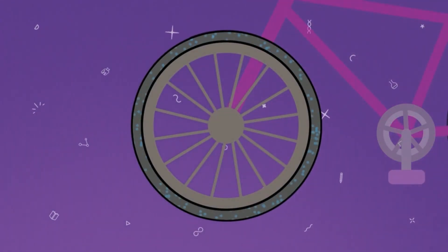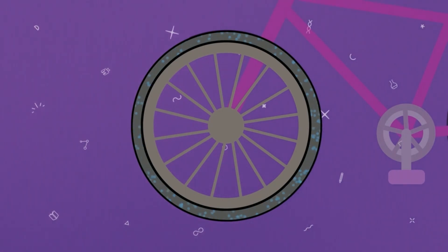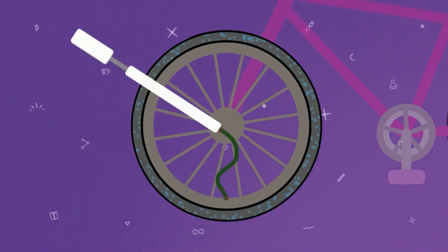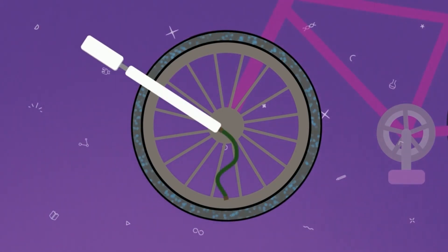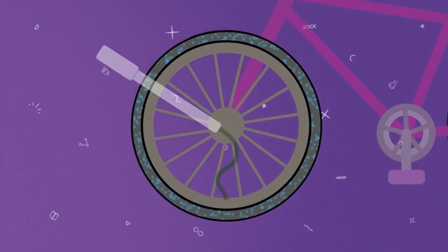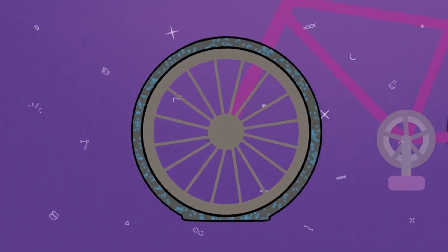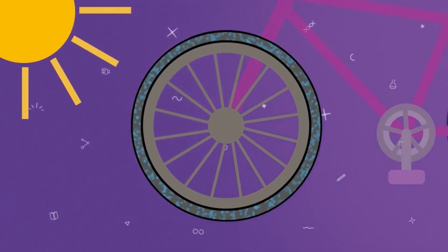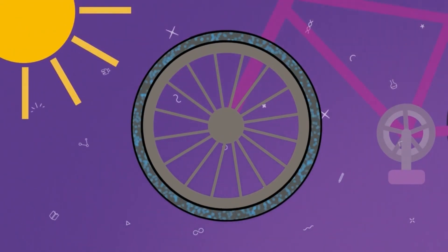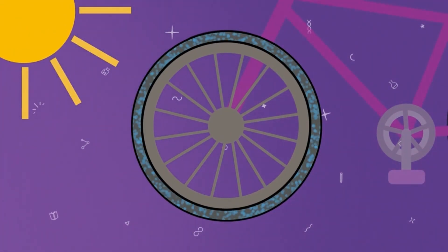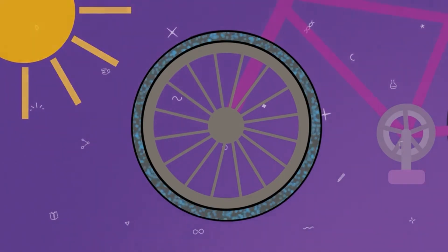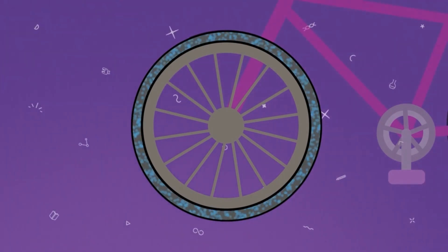Pressure increases when particles move faster. To do that, you can either add more particles into the same container, reduce the volume of the container, or increase the temperature. All of these actions increase the overall force that the particles push on the tire wall per unit area.